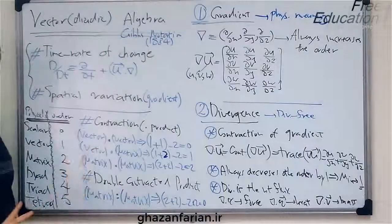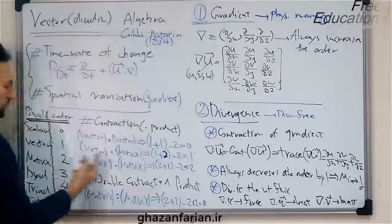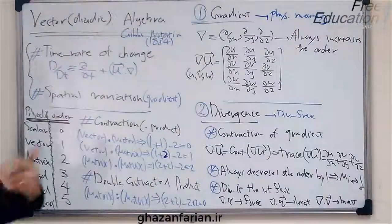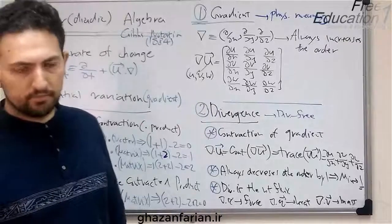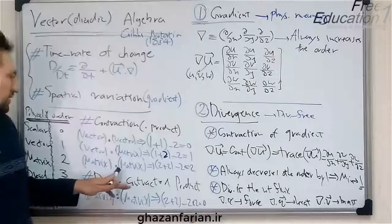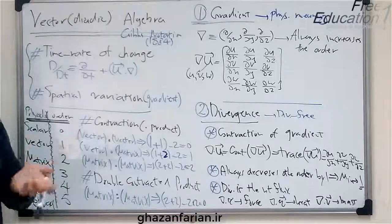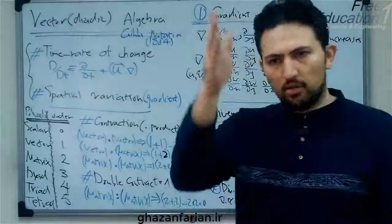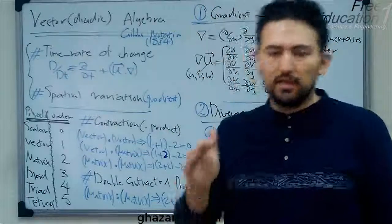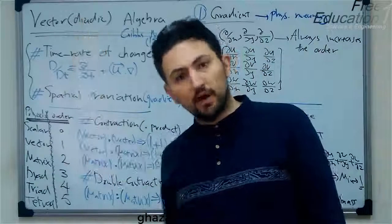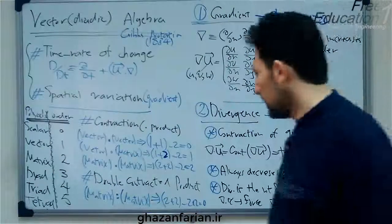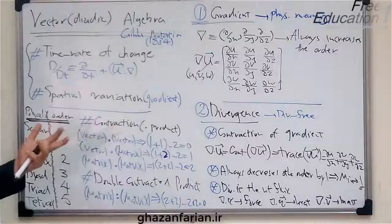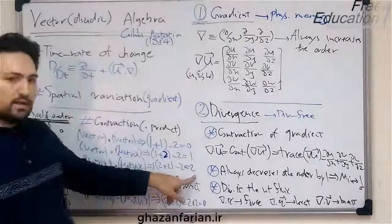For the dot product of two matrices, the order of each matrix is two, so two plus two is four, and four minus two is two. The result of the dot product of two matrices is again a matrix. This is exactly the same as the common product of two matrices — you multiply the first row of the first matrix by the first column of the second matrix, and so on. The common product of two matrices is really a contracted product of them.